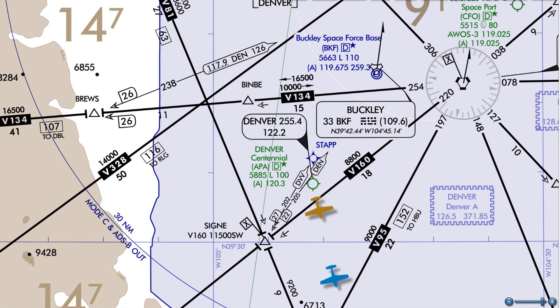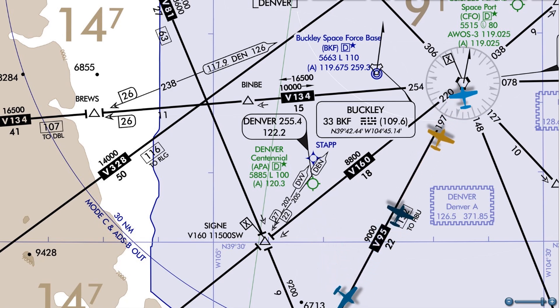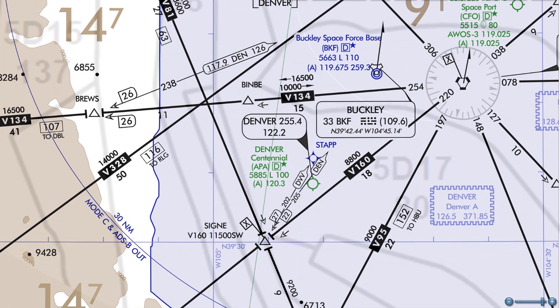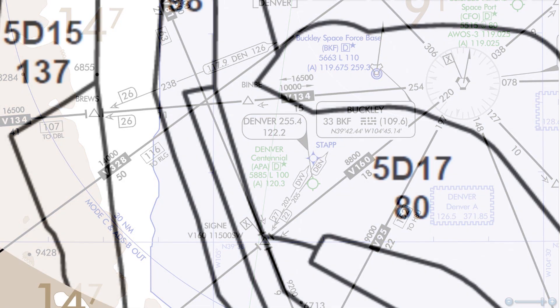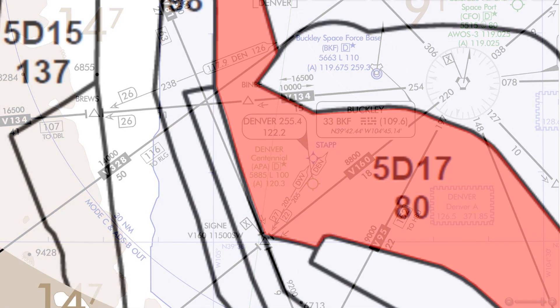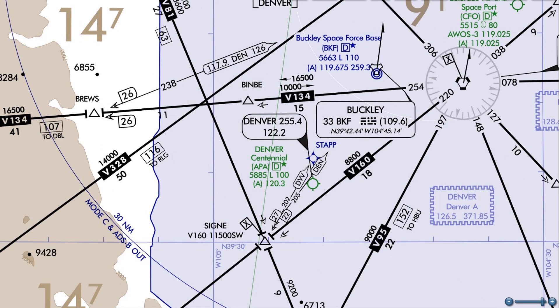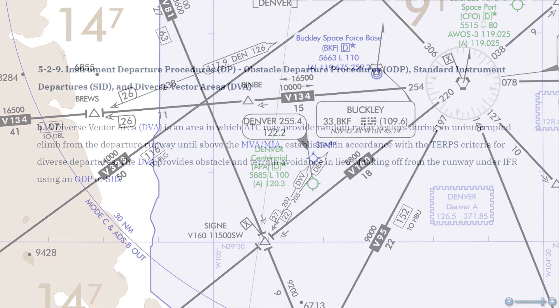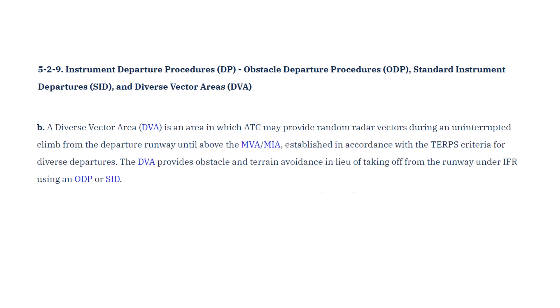This is a pretty busy airport, and it's very close to Denver International, so it won't be easy for multiple departures to follow the exact same ODP. ATC will want to assign some random vectors to keep us separate. But if we look at the minimum vectoring altitude for this area, we see that it's 8,000 feet — a few thousand feet above the airport elevation. In order for ATC to provide a vector below the MVA, they'll use what's called a Diverse Vector Area, or DVA. A DVA is defined in the AIM and can provide obstacle clearance on a random vector, and can be used in lieu of a published departure procedure like an ODP.